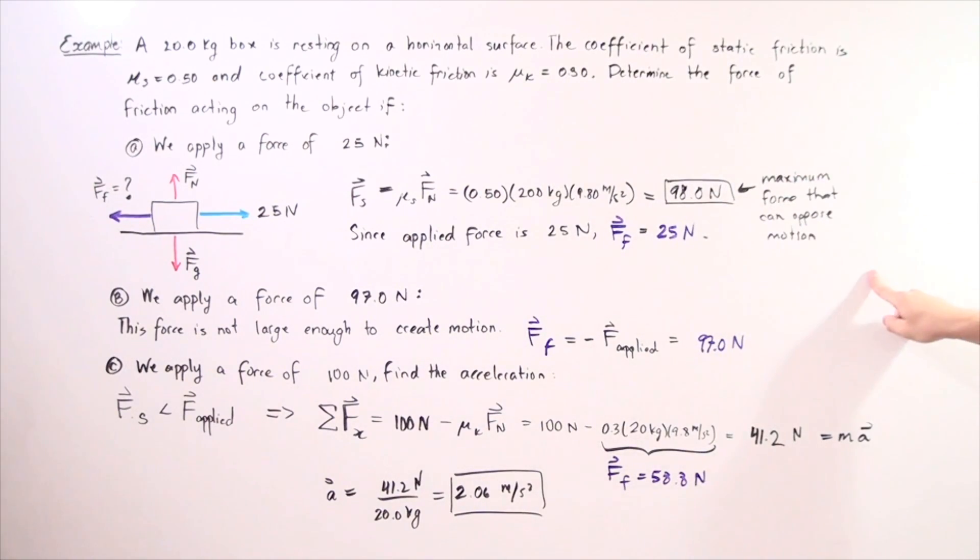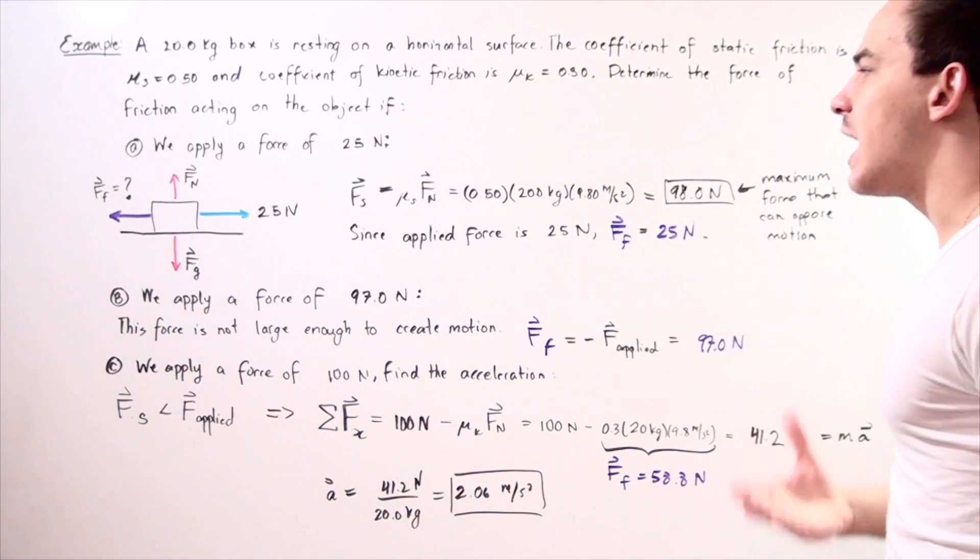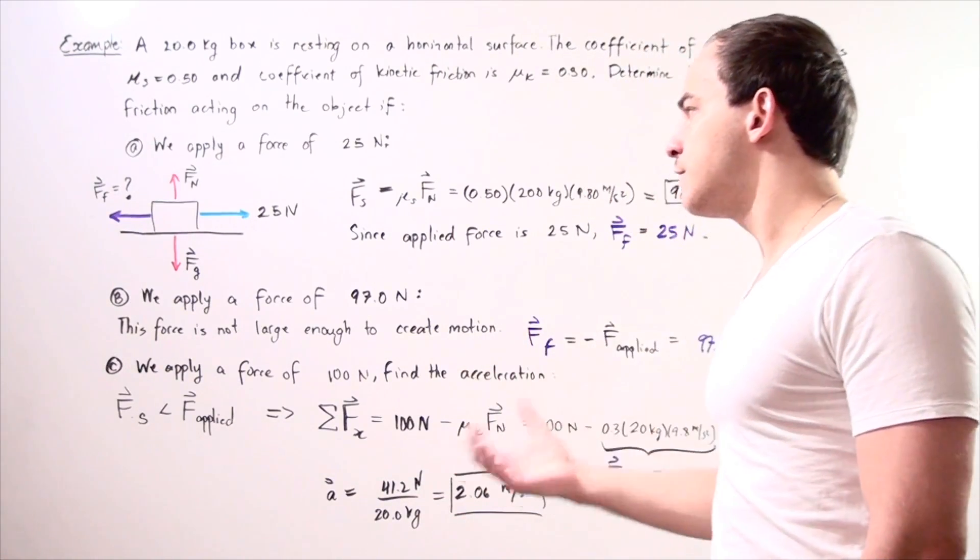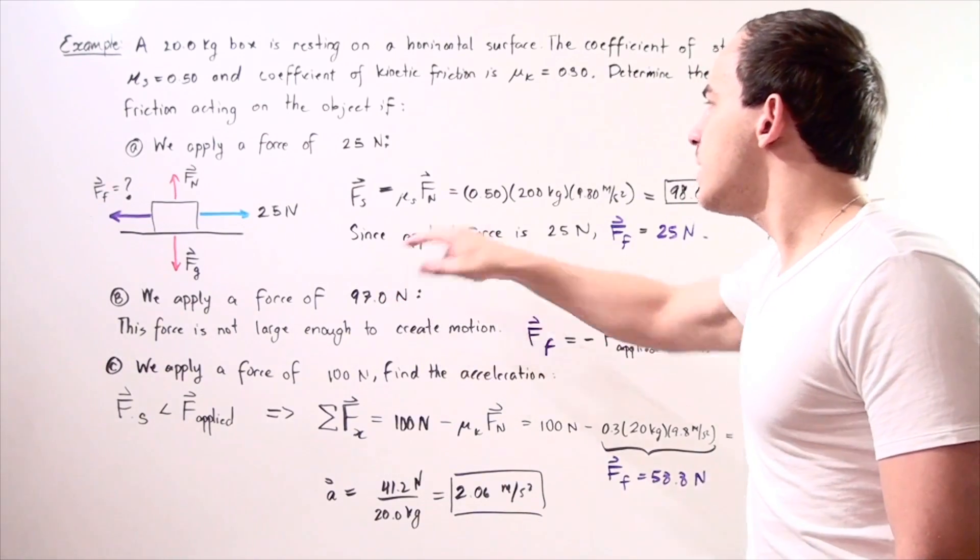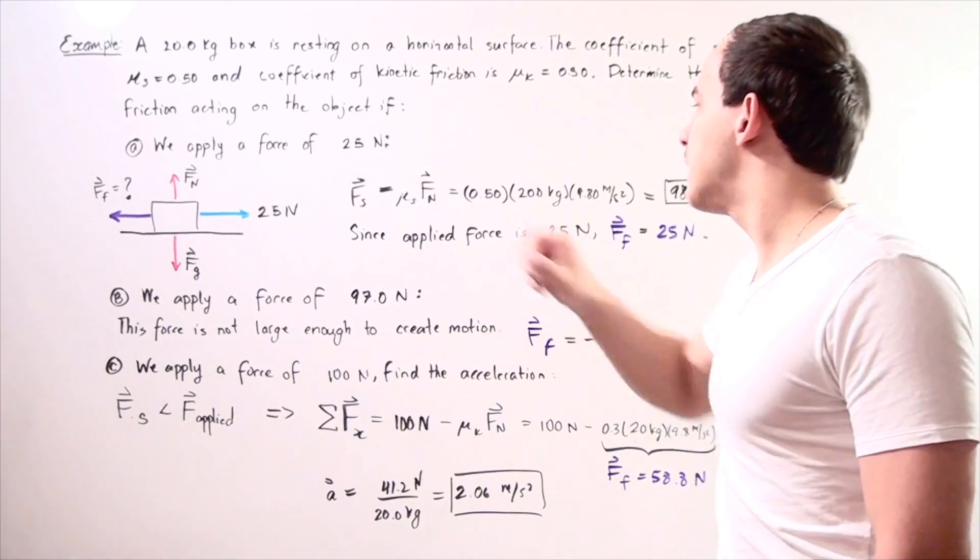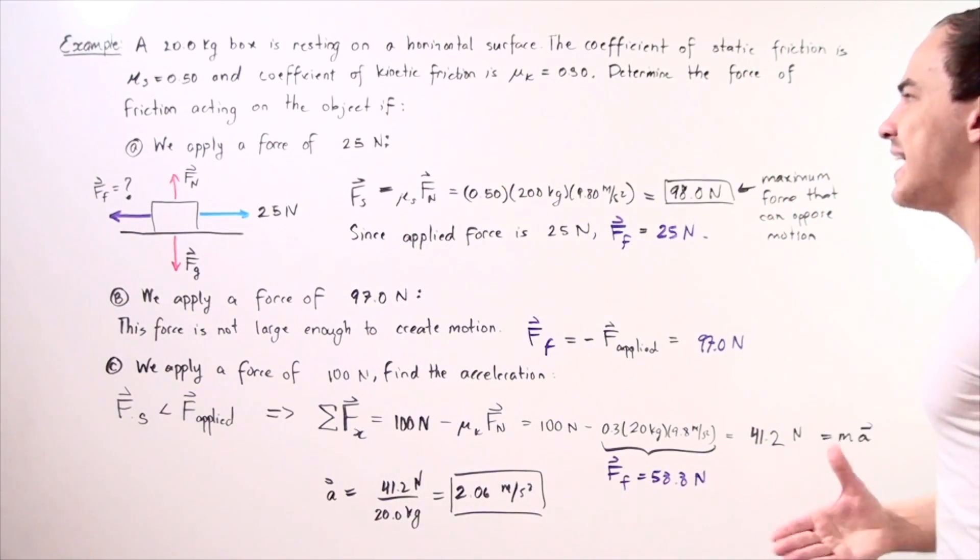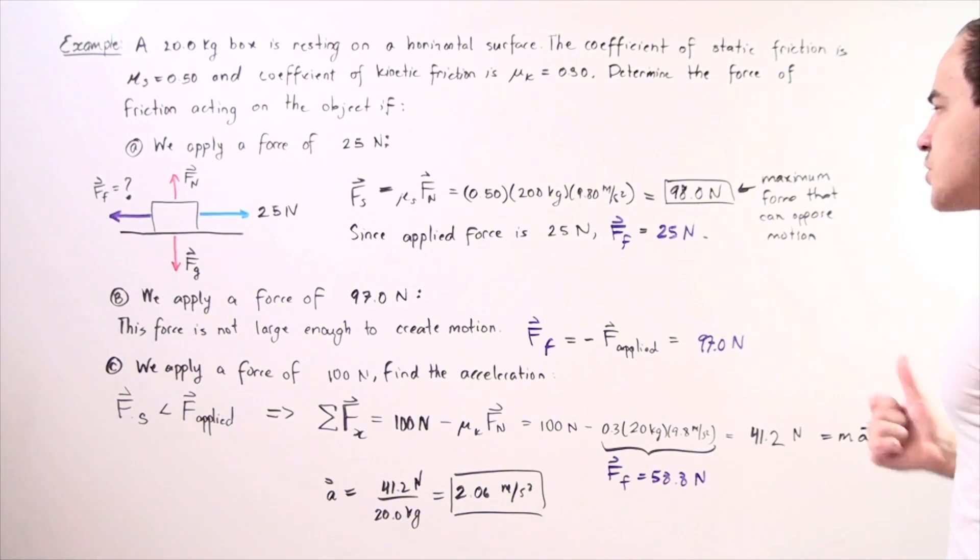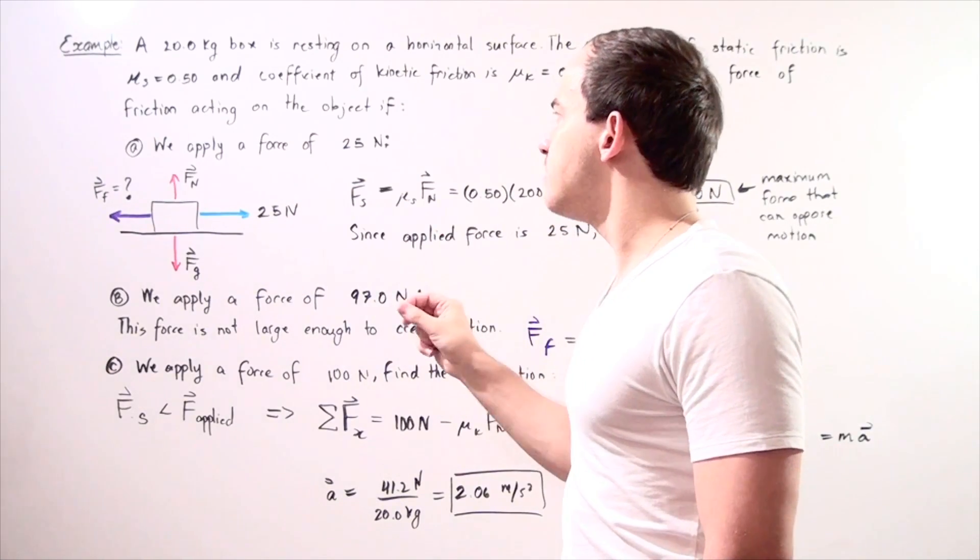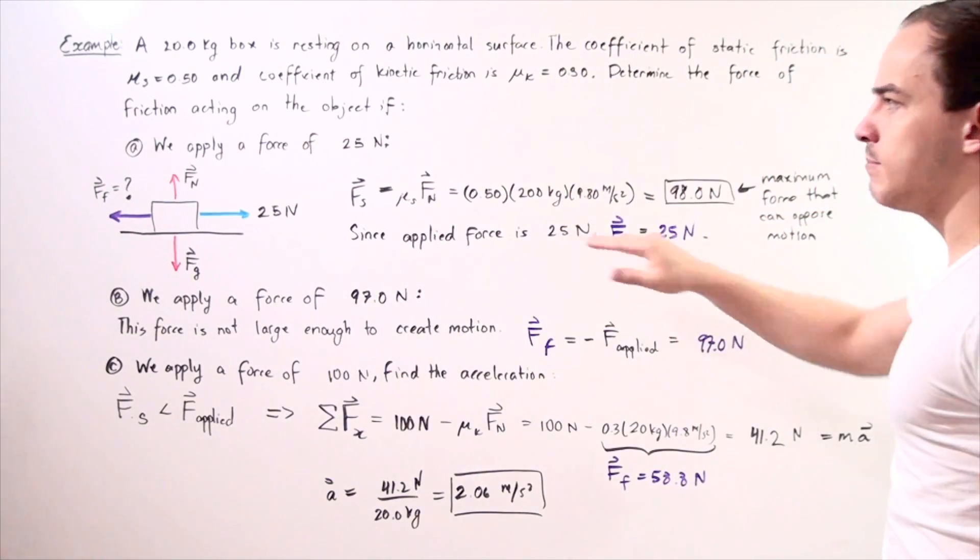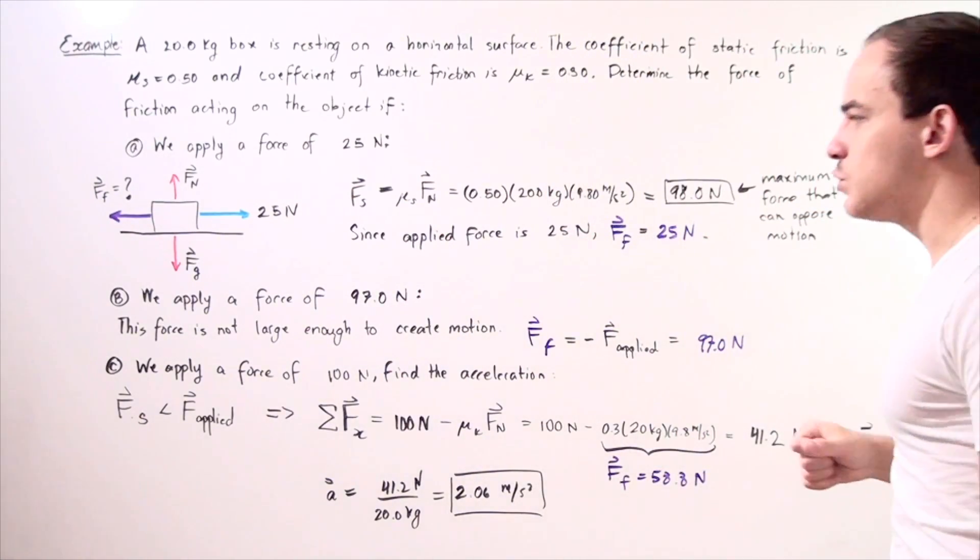This is the maximum force due to friction that will oppose our motion. Any force equal to this force or smaller will not create motion because the frictional force will oppose it. Since we apply a force of 25 newtons, that means an equal but opposite force of 25 newtons will oppose this force. So that means our frictional force in part A is 25 newtons.